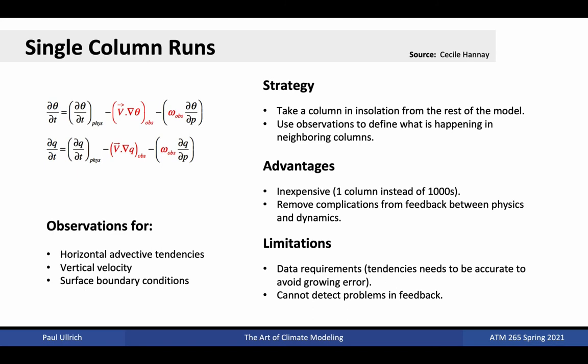Finally, given that parametrizations are only employed within single columns, it makes sense that we should be able to perform simulations with only single columns. In this case, most terms in the dynamical equations are prescribed, including horizontal advective tendencies, vertical velocity, and surface boundary conditions. In some cases, these data are corresponding evaluation data and readily available and of high quality, such as in the case of deployments under the U.S. Department of Energy Advanced Radiation Measurement or ARM program. These simulations are incredibly inexpensive, as only one column is being run instead of thousands or millions, as in the case of a global atmospheric model. These simulations also remove complications from feedbacks between physics and dynamics. However, there are limitations to this approach as well, including a need for the observational data to be very accurate to avoid growing errors, and an inability of these methods to detect problems in feedback processes.